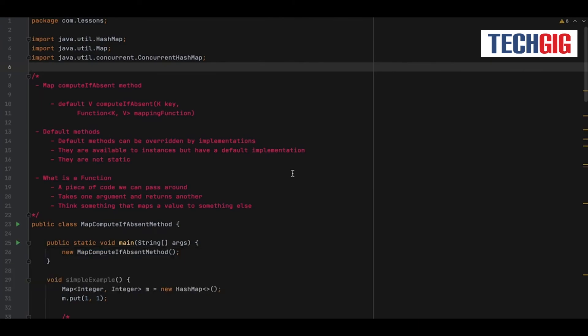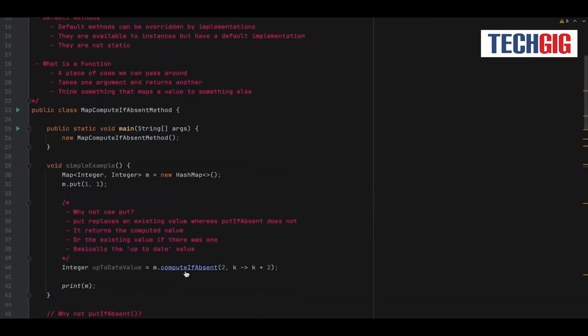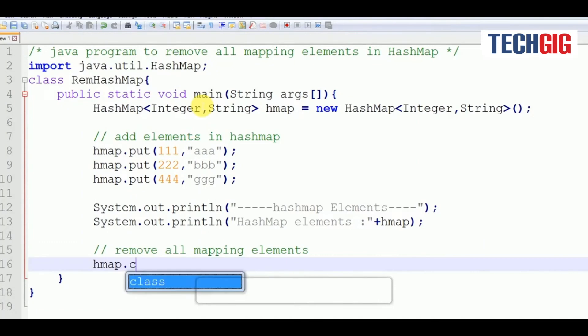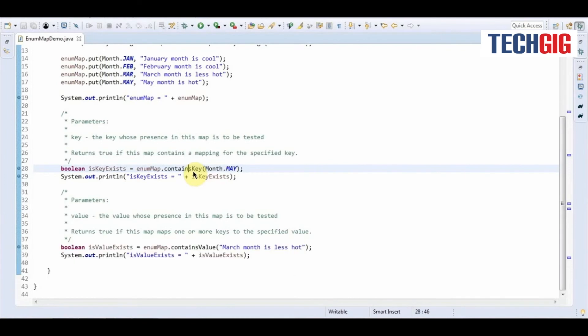ComputeIfAbsent function mapping function calculates the value of the provided key using the given mapping function and adds it to this map if it hasn't already been assigned a value. Clear removes all of the mappings from this map. ContainsValue checks whether this map maps one or more keys to the given value.